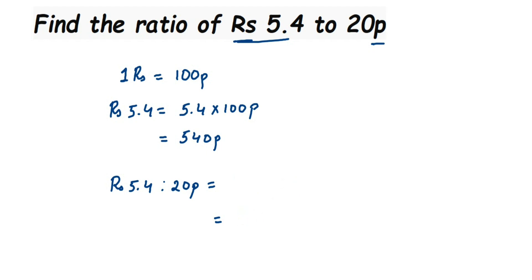I'm going to write down 540 to 20 because we have converted both into paisa. Ratio can also be written in division form, that is 540 divided by 20. Now you can reduce the number: cancel 0 and 0, cancel 2 and 54.